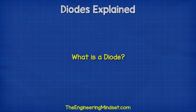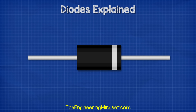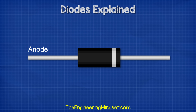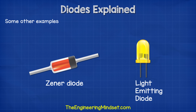So what is a diode? A diode looks something like this and it comes in different sizes. They typically have a black cylindrical body with a stripe at one end and leads coming out to allow us to connect it into a circuit. This end is known as the anode and this end is the cathode. You can also get other forms such as the Zener diode or an LED, which is a light emitting diode, but we're not going to cover those in this video.